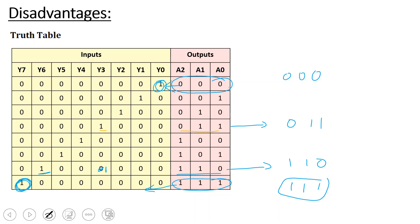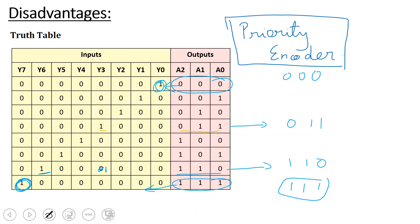These are major disadvantages of the basic encoder. To overcome these problems — the ambiguity when multiple inputs are activated simultaneously — we use a special type of encoder called a priority encoder.